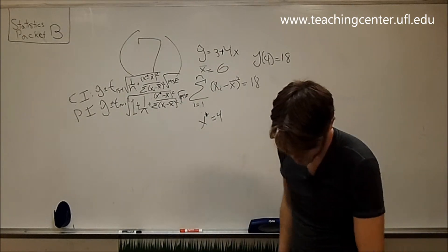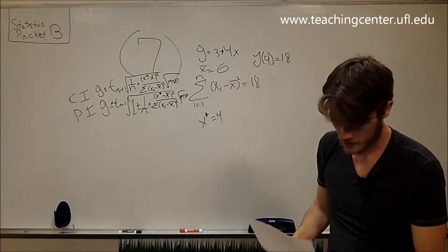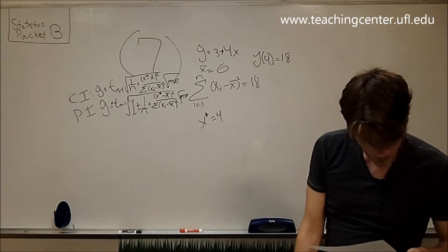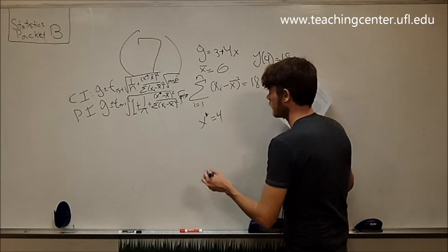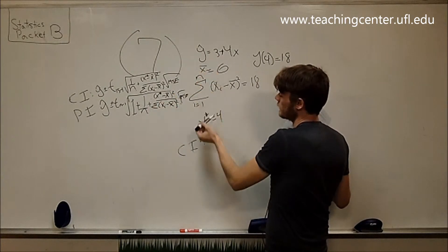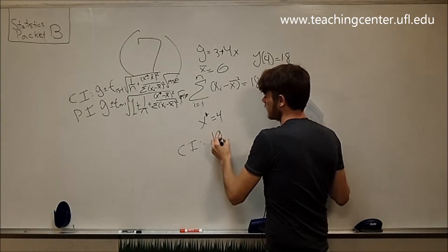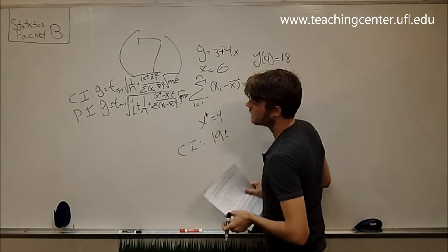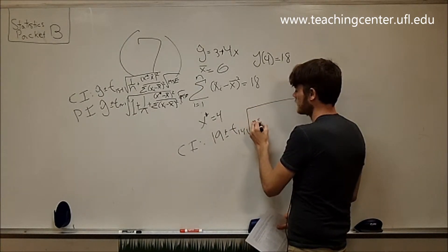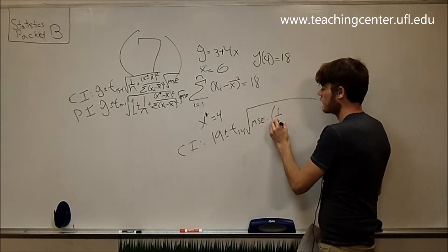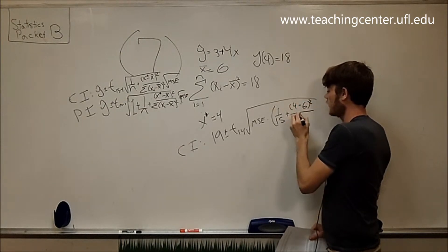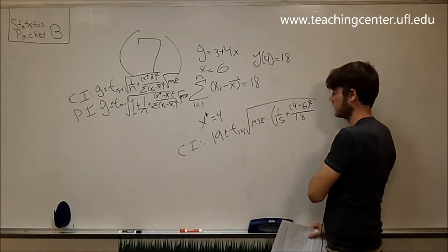Now at the next part of the question, we want to construct the intervals themselves at x equals 4. So we want to do confidence interval first. Do y hat, so we plug in x star into our equation y hat, so we get 16 plus 3 is 19. 19 plus or minus t at 14, whatever that is. You guys can find that, times the square root of MSE times 1 over 15 plus, and then we have x star minus x bar, so 4 minus 6 squared over, and we have this thing is 18.